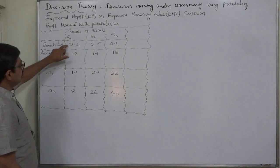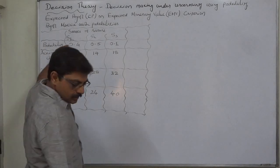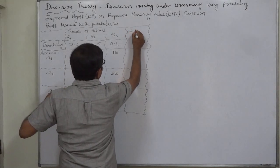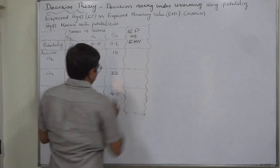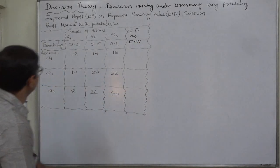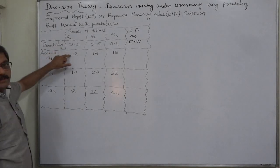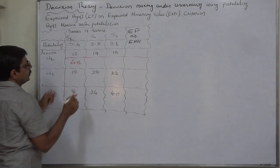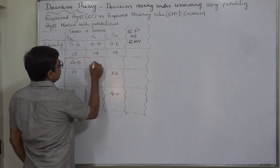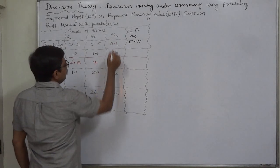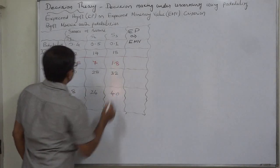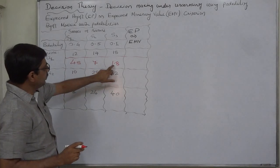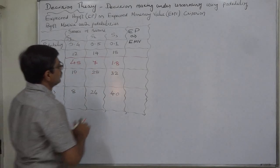Using x·P(x), for action A1: 12×0.4 = 4.8, 14×0.5 = 7, and 18×0.1 = 1.8. The summation is 4.8 + 7 + 1.8 = 13.6. So the expected payoff for A1 is 13.6.